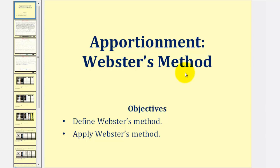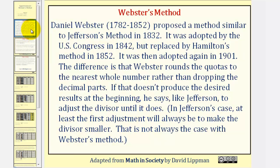Welcome to a lesson on Webster's method of apportionment. Daniel Webster proposed a method similar to Jefferson's method in 1832. It was adopted by US Congress in 1842, but was replaced by Hamilton's method in 1852. It was then adopted again in 1901.